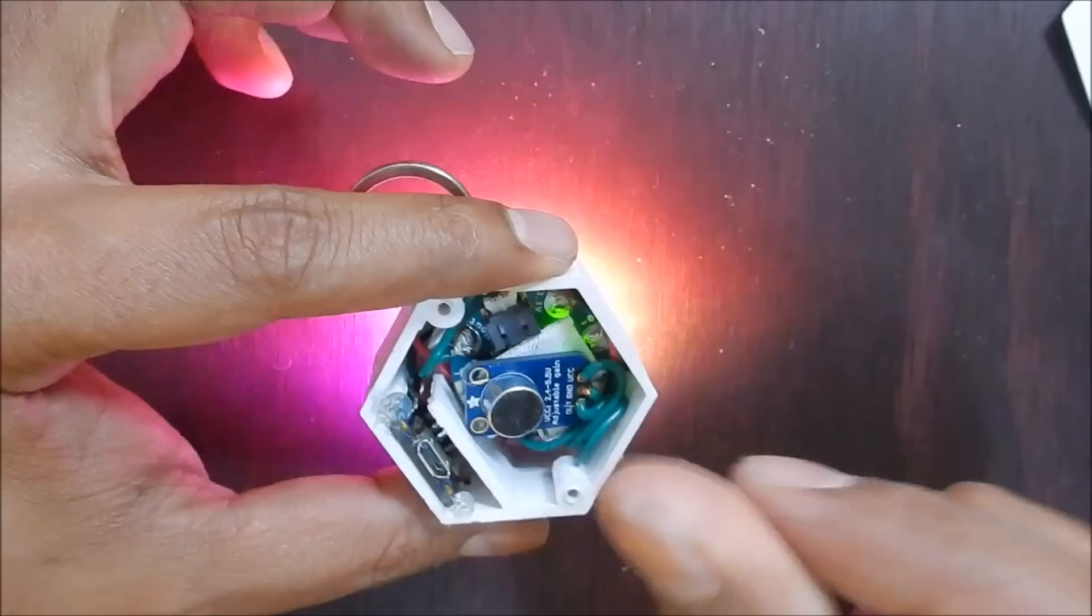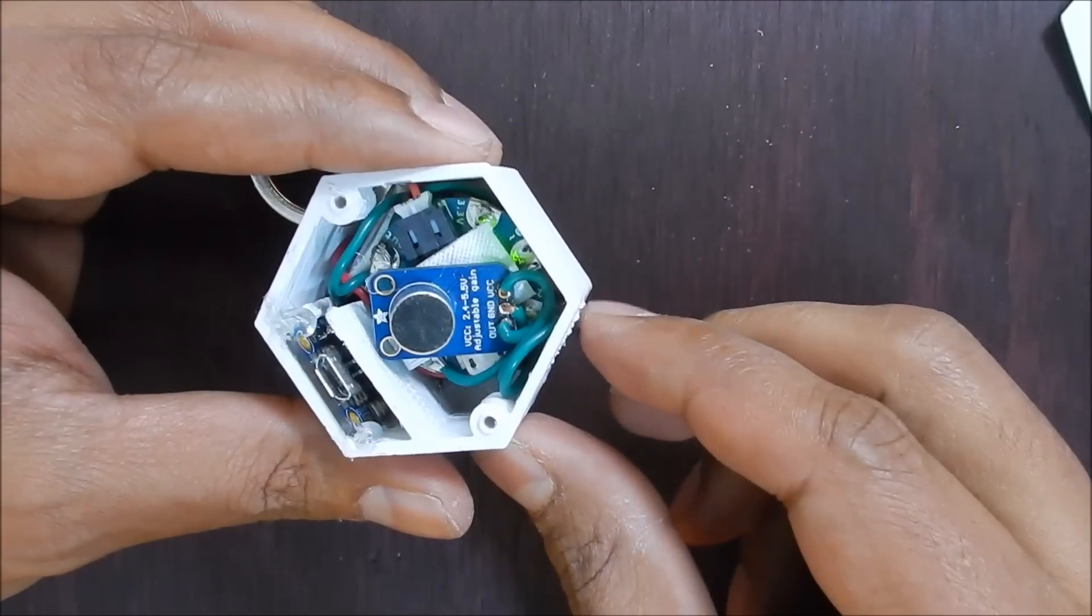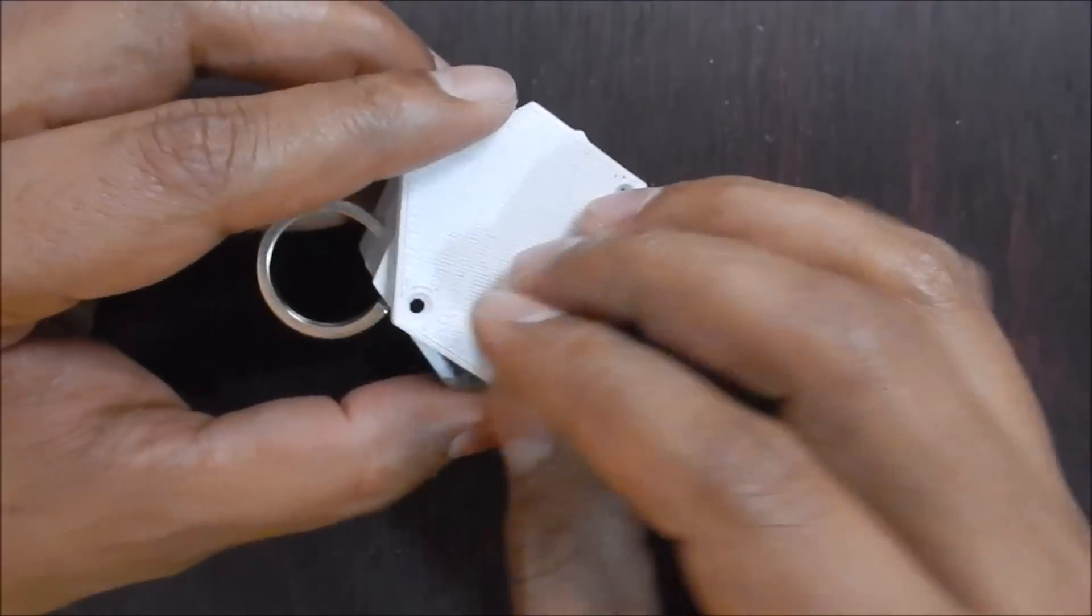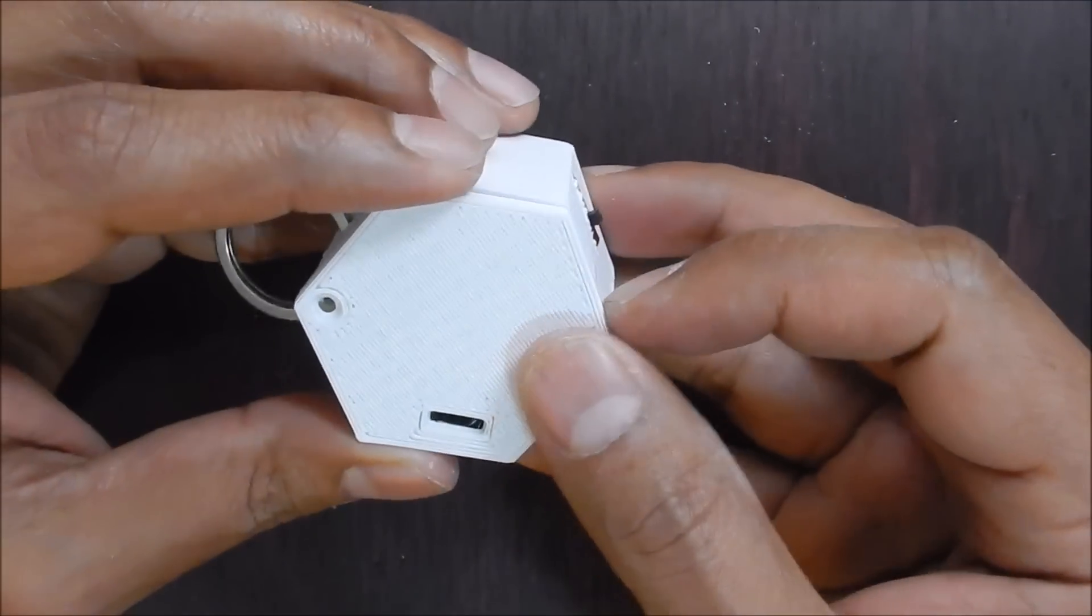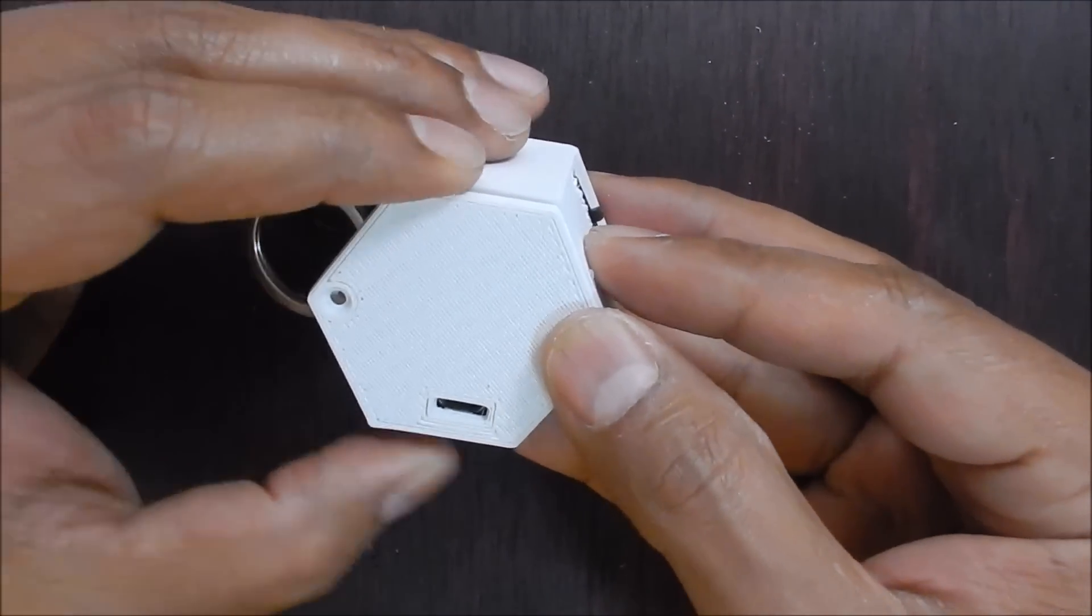Test the pendant before closing the back. Insert the lid and use a couple of number 4 screws to hold in place.